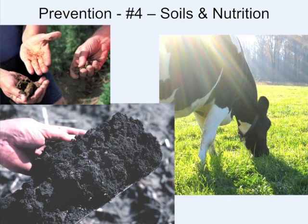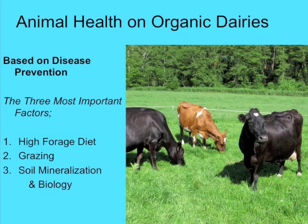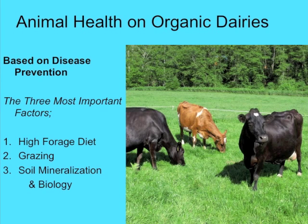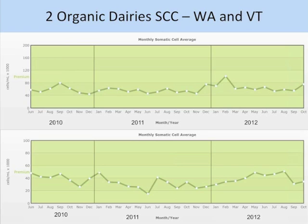Organic goes a step further than the conventional mastitis triangle. The basis of health is the soil. For ruminant animals — dairy cows, beef cows, goats, and sheep — the top three things for health are a high forage diet, grazing, and soil biology and mineralization. If we get the soil balance right, we'll have more nutritious crops with more minerals and energy, and the cows will do better and have less mastitis. It's holistic thinking beyond just the mammary gland.